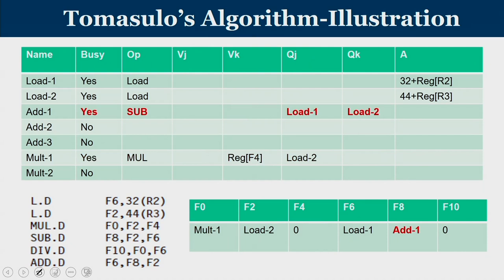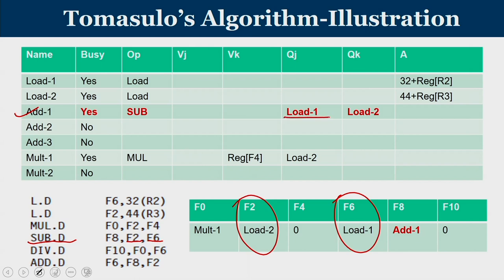The subtraction instruction uses F2 and F6. RSI[F2] = Load2 (not available) and RSI[F6] = Load1 (not available), so both operands are unavailable. QJ = Load2 and QK = Load1 — both must wait. The result goes to F8, so RSI[F8] = Add1. Adder 1 will produce the result for F8 once both Load1 and Load2 complete.